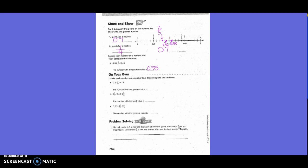Problem solving. Hannah made 7 tenths of her free throws in a basketball game. Abrea made 9 tenths of her free throws. Dina made 3 fourths of her free throws. Who is the best shooter? Explain. So should we basically just make them into decimals? Yeah.